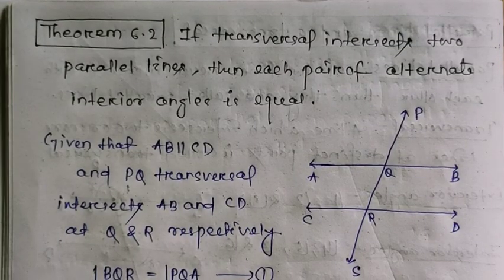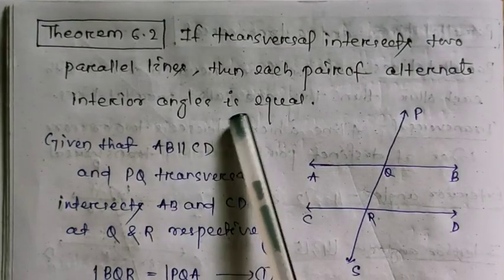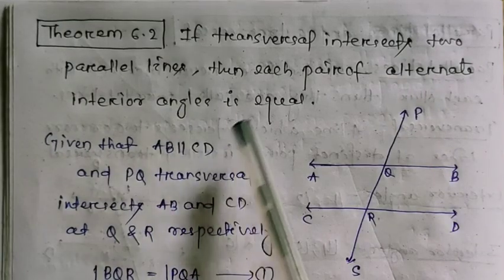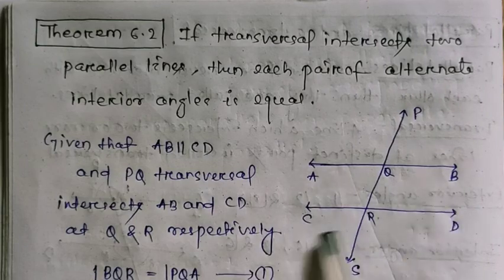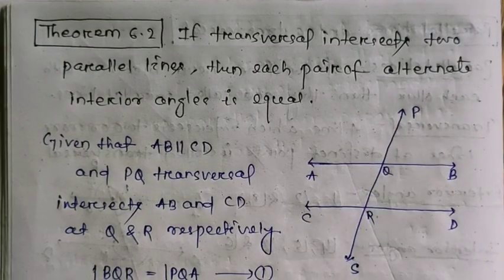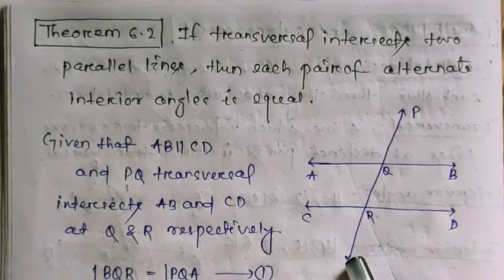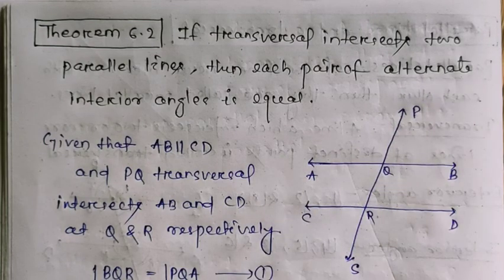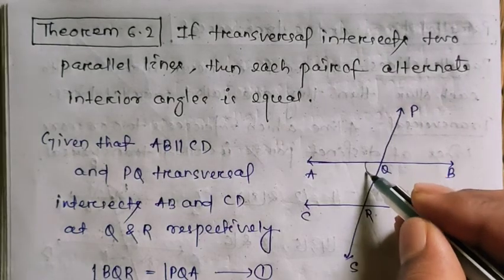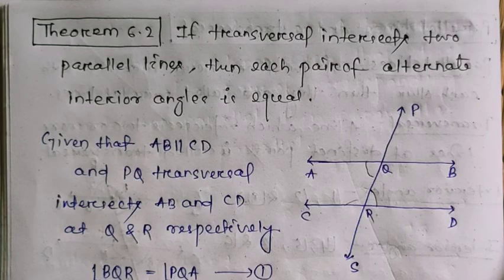Theorem 6.2 states that if a transversal intersects two parallel lines, then each pair of alternate interior angles is equal. Given AB parallel to CD and PQ is the transversal intersecting AB at Q and CD at R respectively, we need to prove that the alternate interior angles are equal.